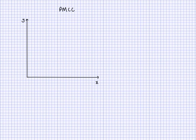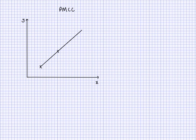Now for Pearson's product moment correlation coefficient — the PMCC — this determines how good a linear correlation there is. I'll mark two crosses and draw a straight line through them to illustrate the concept of linear correlation.